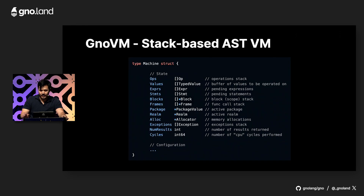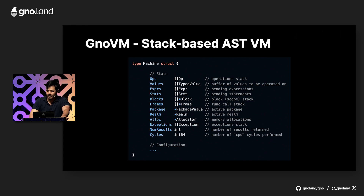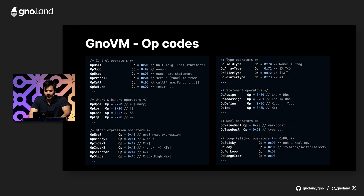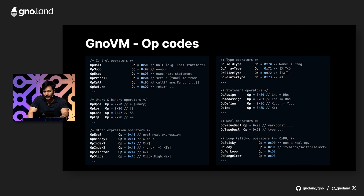The Gno virtual machine is written purely in Go and interprets the abstract syntax tree directly — it's not a bytecode interpreter. This makes the implementation much more intuitive. You can see there are seven stacks in the machine: the op stack, the value stack, and others. Expressions and statements are put onto the stack. The opcode stack helps the VM remember what to do next. There are about 100 opcodes, each with a fixed CPU cost. There's basically a big for loop where the machine fetches the next opcode and performs a single unit of computation on the AST until the program terminates.